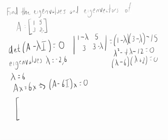We're subtracting 6 on the main diagonal, so that would be the 1 and 3 positions here. So 1 minus 6 is minus 5. We have a 5, then we have a 3, then we have a 3 minus 6 — that's negative 3.